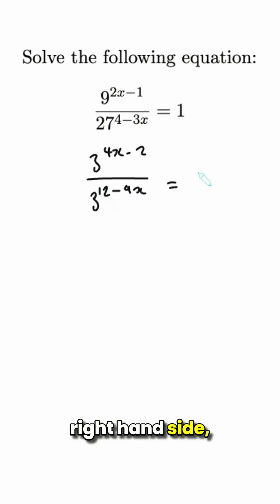Then on the right-hand side, I've got 1. Now 1 could be written as a power of 3 by writing it as 3 to the 0, because anything to the power of 0 is always 1.